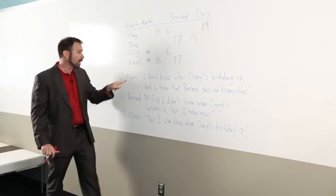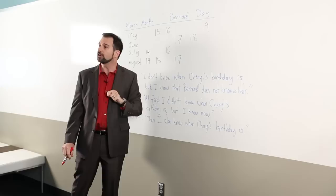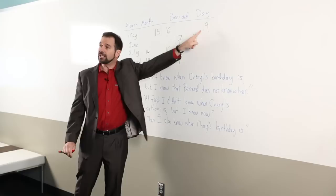Albert's first statement is, I don't know when Cheryl's birthday is, but I know that Bernard does not know either. Now, the fact that he knows Bernard doesn't know either means that the day cannot be the 18th or the 19th.